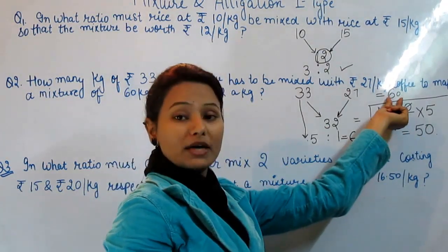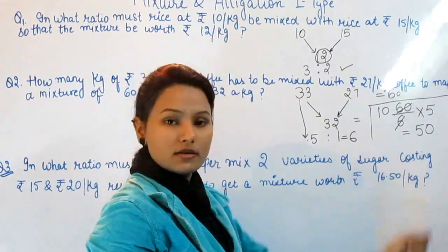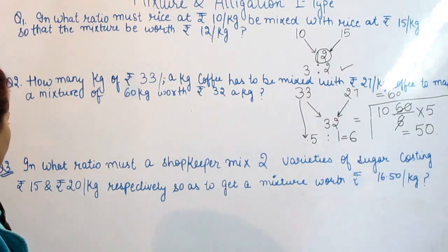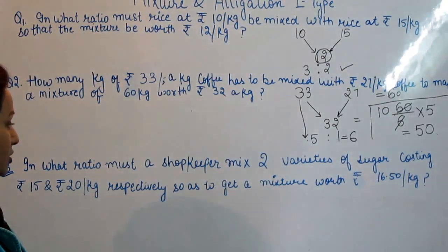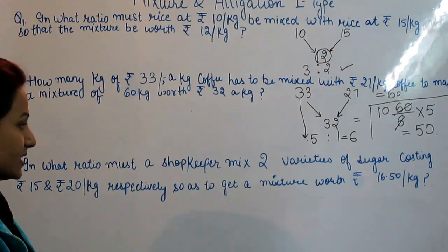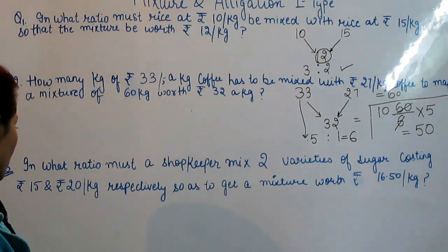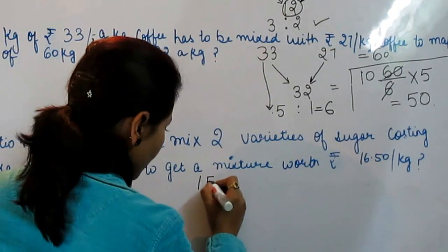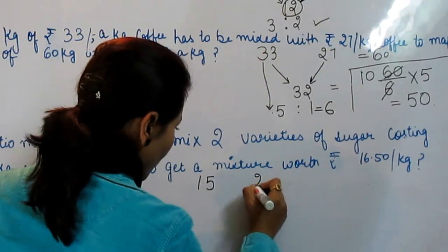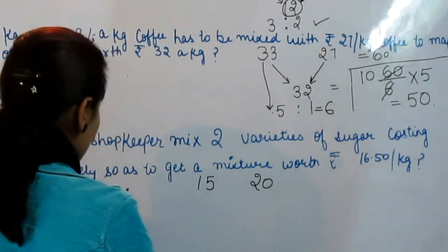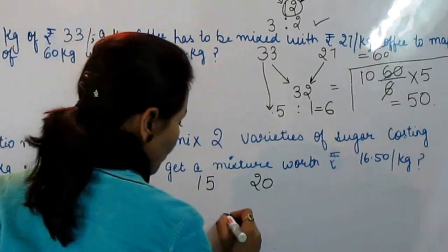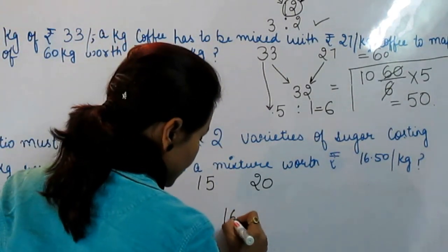Third question: In what ratio must a shopkeeper mix two varieties of sugar costing Rs. 15 and Rs. 20 respectively, so as to get a mixture worth Rs. 16.5?